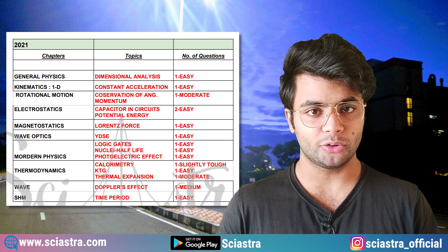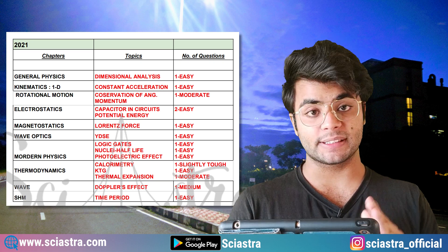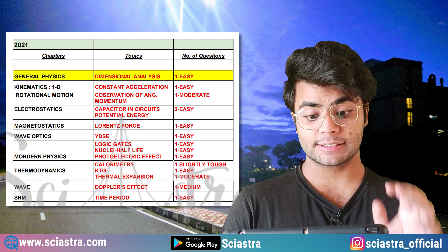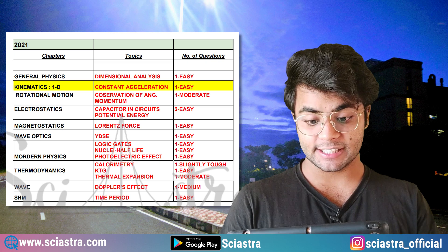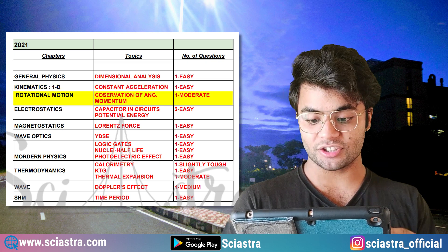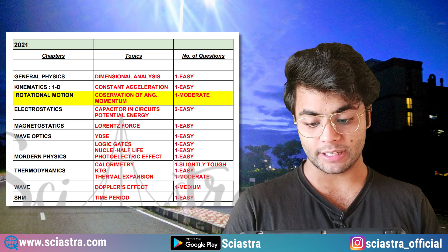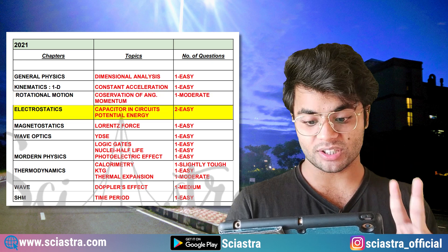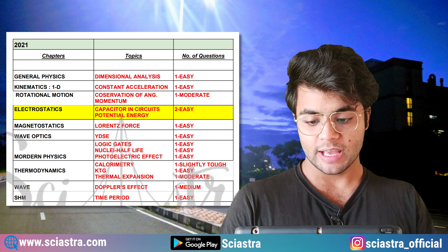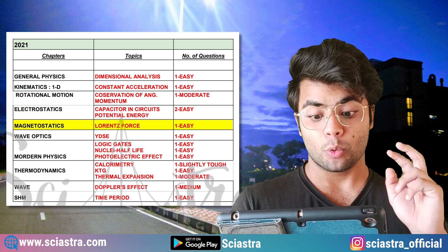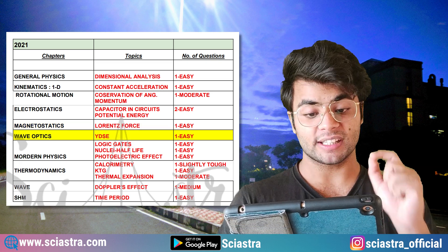Now let's come to the analysis of IET 2021. From general physics, based on dimensional analysis, one easy question came. From kinematics 3D, one easy question came. Rotational motion: one moderate level question based on conservation of angular momentum. Electrostatics: two easy questions came based on capacitance in the circuit and potential energy. Magnetostatics: Lorentz force, one easy question came.